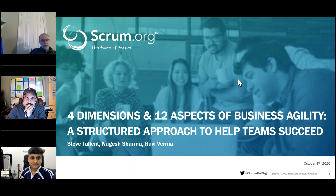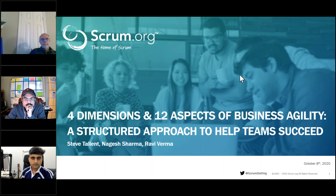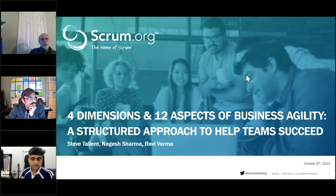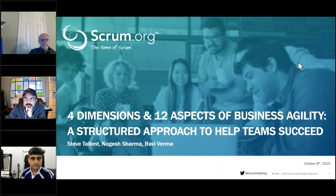We're going to be talking about a way to align interpretation of agility. There are a lot of different interpretations of agility in organizations. Ravi is going to talk about how we would quantify what we usually think are gut-based assumptions. Ravi, Nagesh, and Steve are going to give you some starting indicators of what you could use in terms of measurements to get started around evidence-based management to create that alignment. If we have time, we'll go through some case study and role-playing.